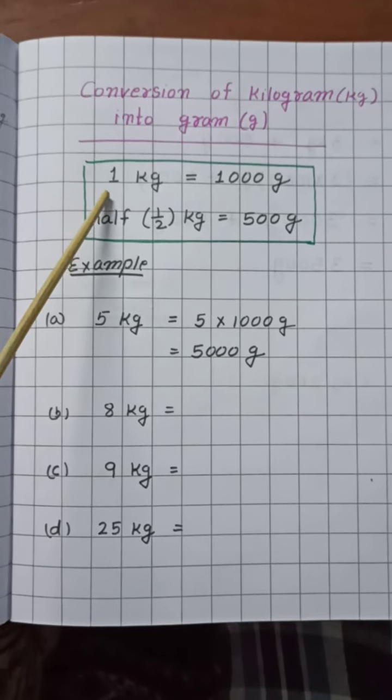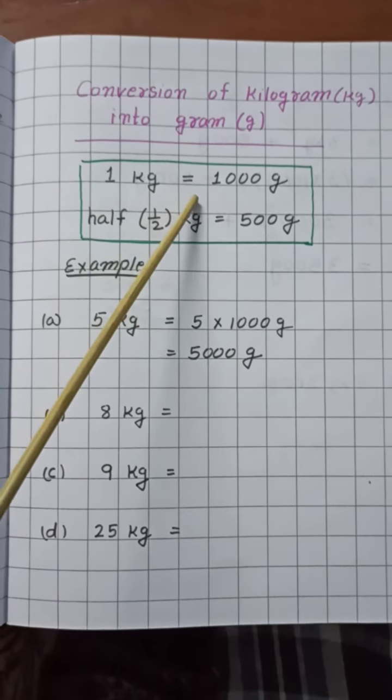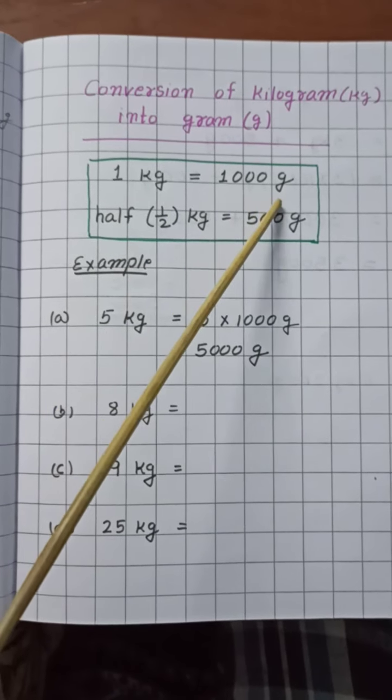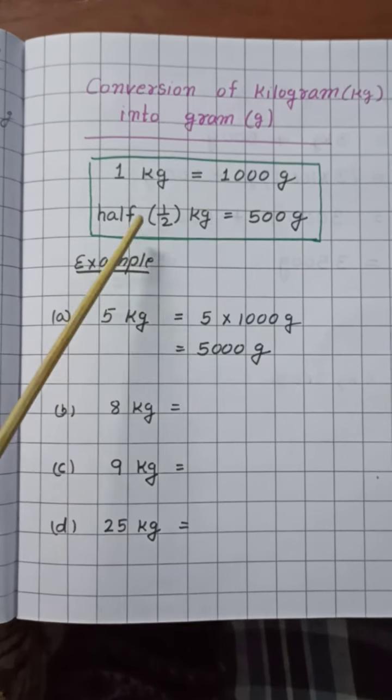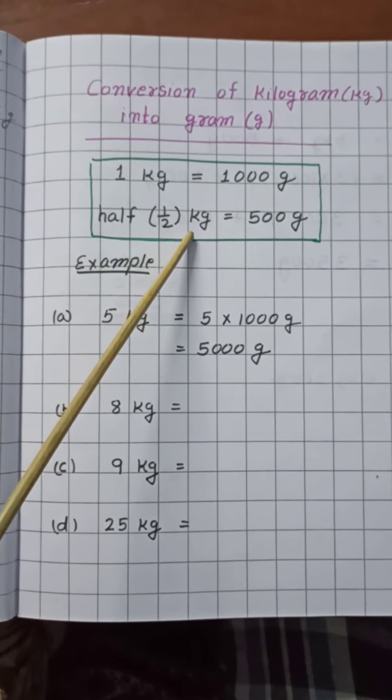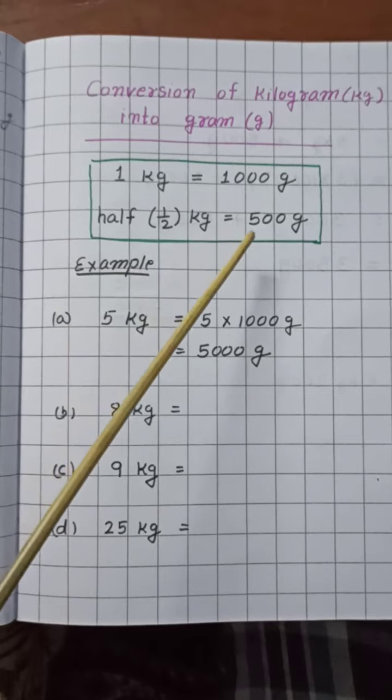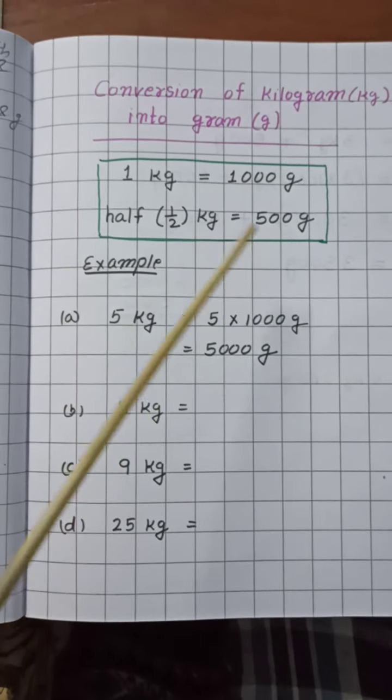Here, 1 kilogram is equal to 1000 gram, and half kilogram is equal to 500 gram.